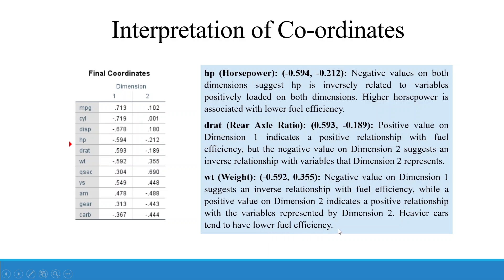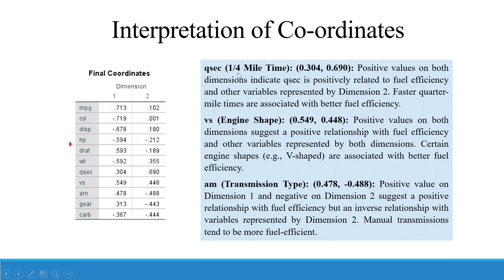Q-sec (quarter mile time) is positive on both dimensions — positive values indicate Q-sec is positively related to fuel efficiency and other variables represented by Dimension 2, with faster quarter mile times associated with better fuel efficiency. VS engine type is positive on both dimensions — positive values suggest a positive relationship with fuel efficiency and other variables on both dimensions, indicating certain engine configurations are associated with better fuel efficiency. AM transmission (automatic or manual) is positive on Dimension 1 and negative on Dimension 2 — indicating a positive relationship with fuel efficiency but an inverse relationship with Dimension 2 variables, suggesting manual transmissions tend to be more fuel efficient.